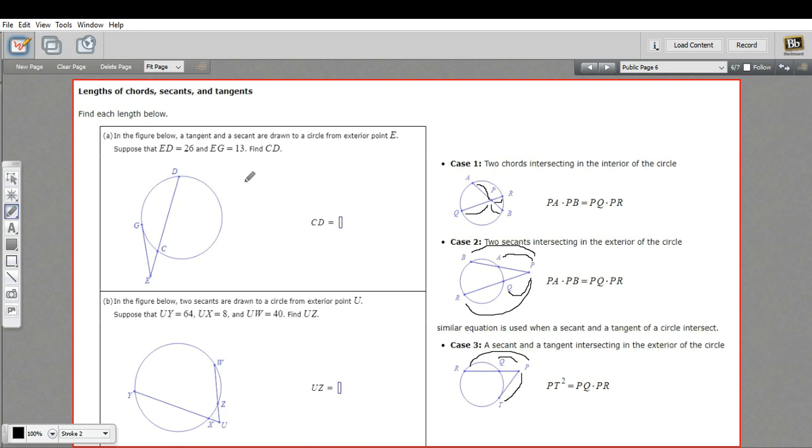Let's see if we can try a couple of these in our problems. This one, the first thing I'm going to do is just try to identify which case we've got here. It looks like we've got a secant line, and this is probably a tangent. So it says ED is 26, and EG is 13, so we want to find CD.